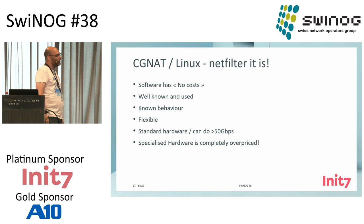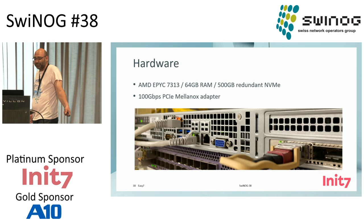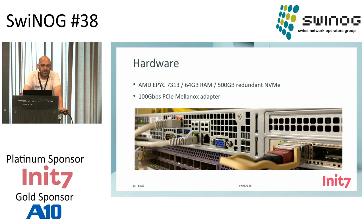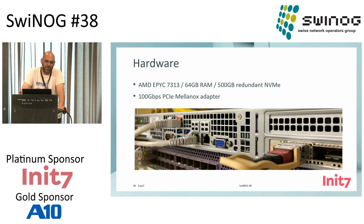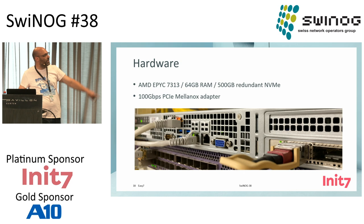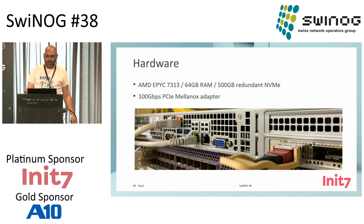So let's get the server — nothing fancy again. We went with an EPYC processor, single socket. 64 GB RAM is pretty fine — I'd expected to need more. Just some disk, but that's not really relevant because we don't need much disk space. And we use the Mellanox network card — 100 gigabit directly in the server.